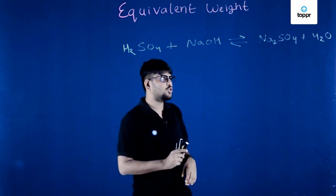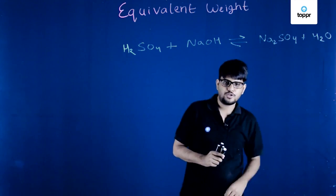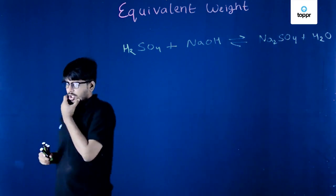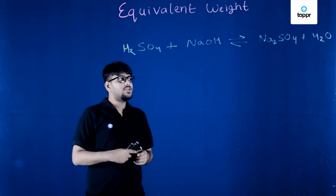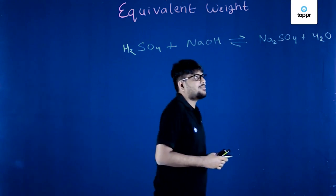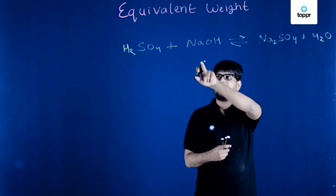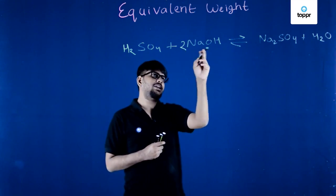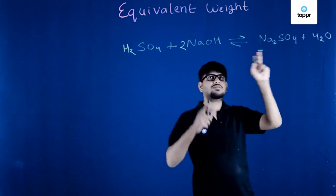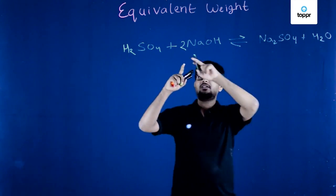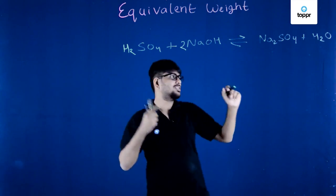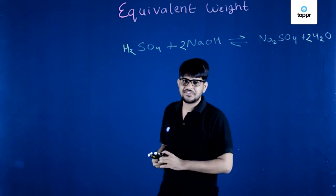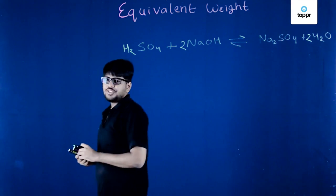This is a fairly simple question. If you look at this reaction, you'd say it's easy — just balance it. There are two Na atoms, so we write 2 NaOH. With two hydrogens on each side, the reaction balances nicely.